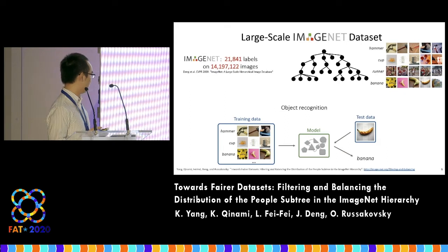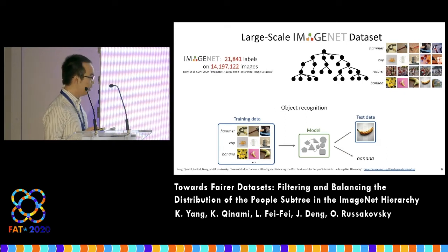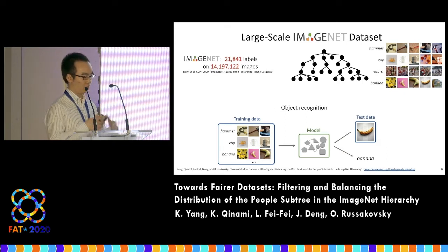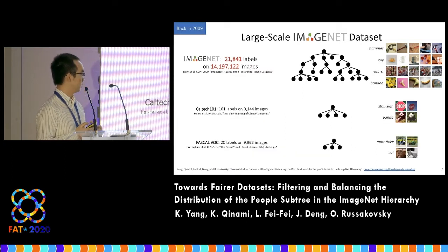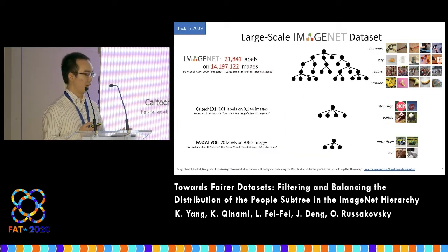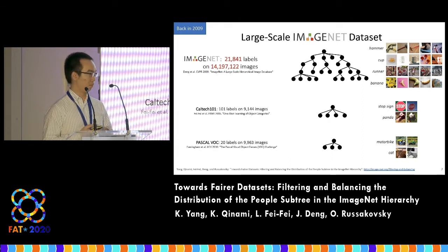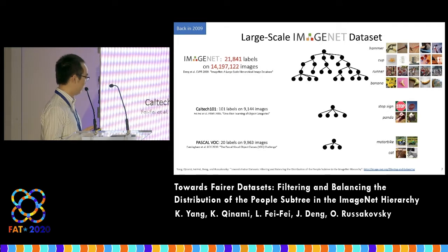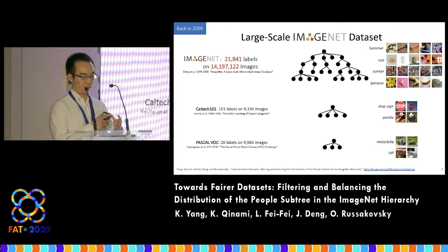For example, recognizing labels such as hammer, cup, and banana by learning a statistical model from a large collection of annotated images. When ImageNet was constructed in 2009, much of the object recognition work was being done on benchmarks such as Caltech 101 or Pascal VOC, with only about 10,000 images.